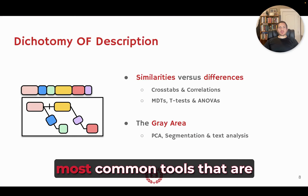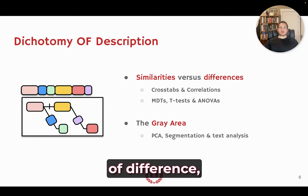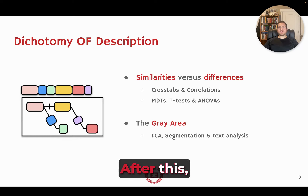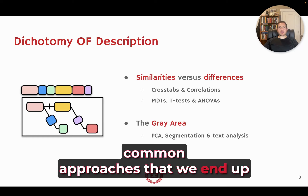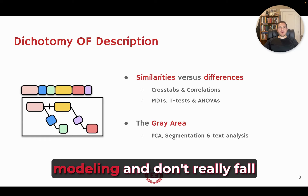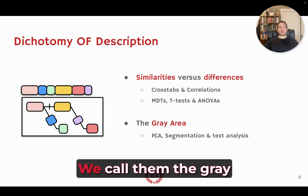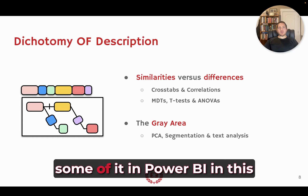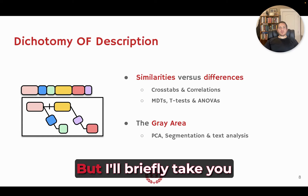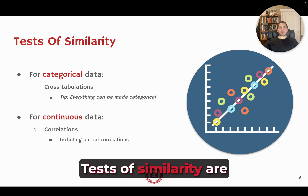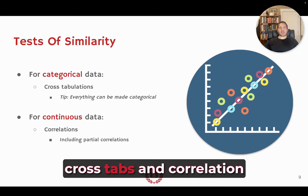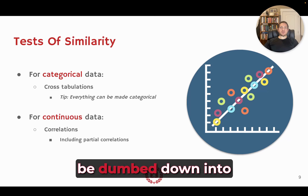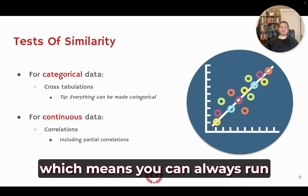I'm going to present the most common tools available for tests of similarity and tests of difference — specifically crosstabs, correlation, mean difference tests, t-tests, and ANOVAs. Tests of similarity are very straightforward. The most common are crosstabs and correlation analysis. Any metric of any measurement type can always be reduced to categorical data, which means you can always run crosstabulation. Typically categorical data is described through crosstabulations, and continuous data through correlations.